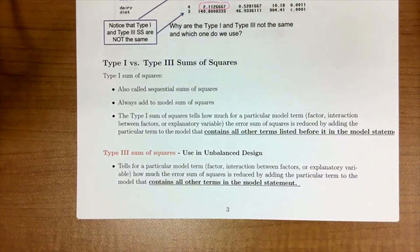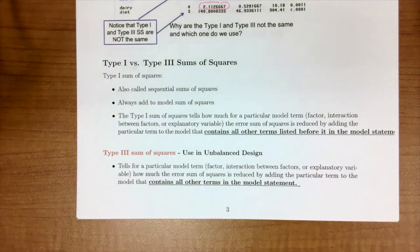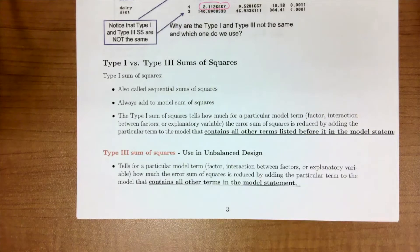Type one sums of squares is also called the sequential sums of squares — it's all about adding to the model sums of squares. It tells us how much, for a particular model term, the sums of squares is reduced by adding that term to a model containing all other terms listed before it in the model statement — hence 'sequential.'